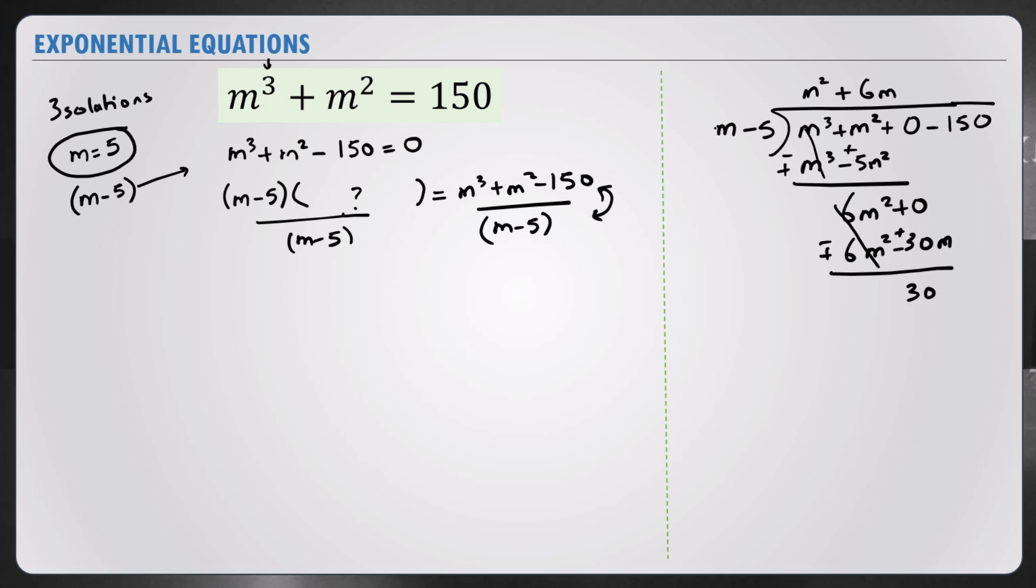This cancels and I get 30m minus 150. How do I get rid of that? I have to add 30, and we get 30m minus 150. When I subtract this, this cancels and I have no remainder. That's good.